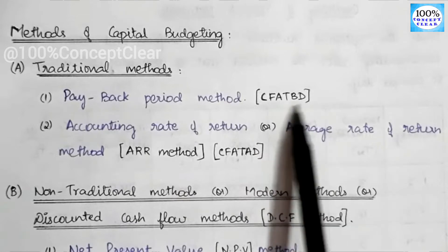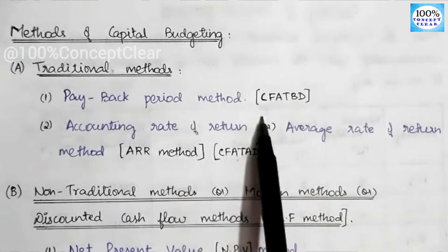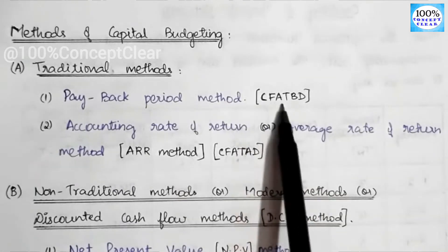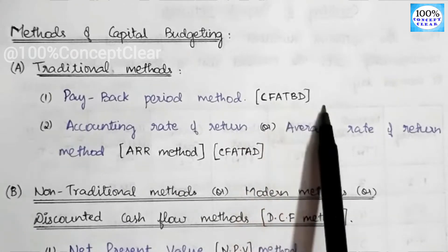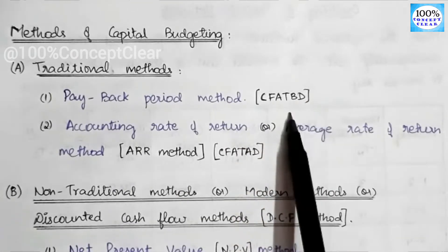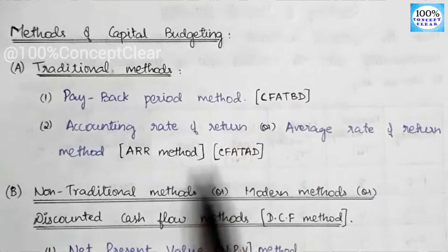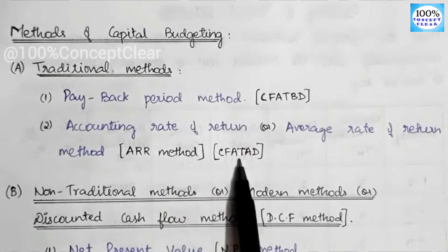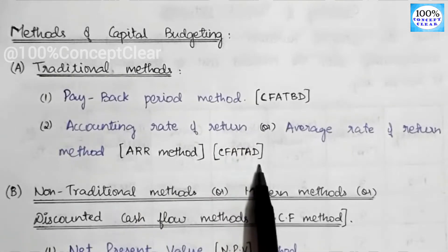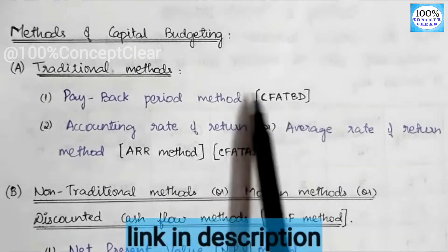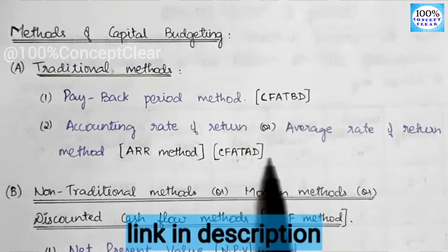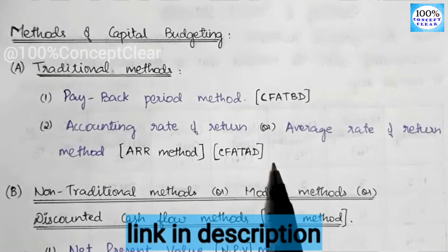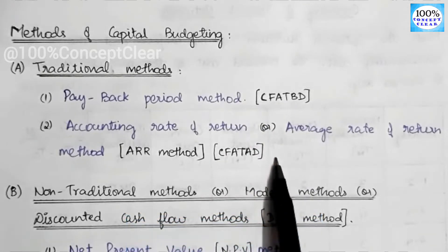The payback period uses cash flow after tax and before depreciation. The ARR method uses cash flow after tax and after depreciation. We are going to work through the cash flows in those videos available in the playlist.